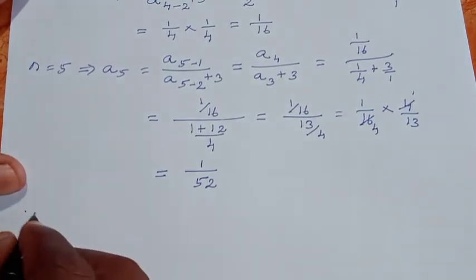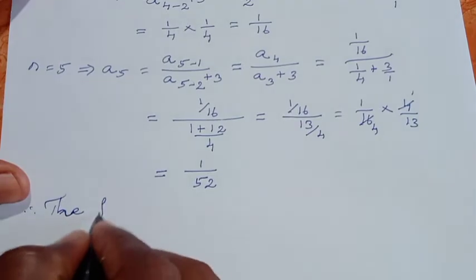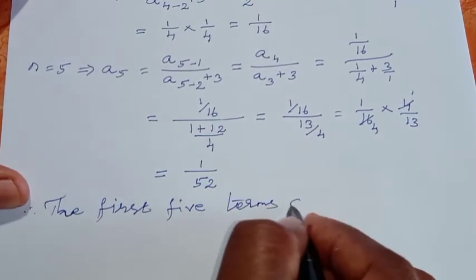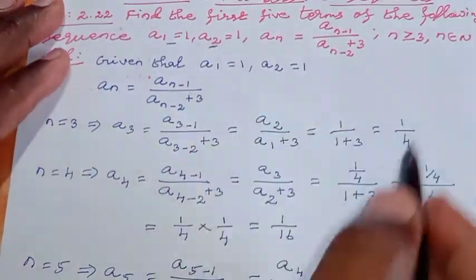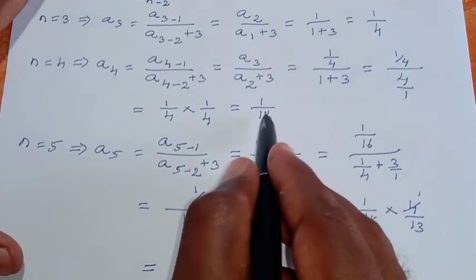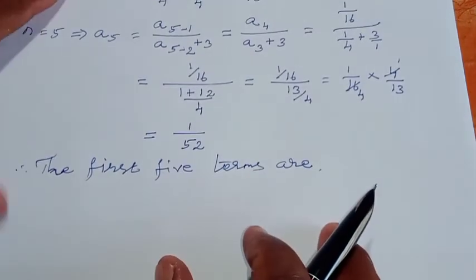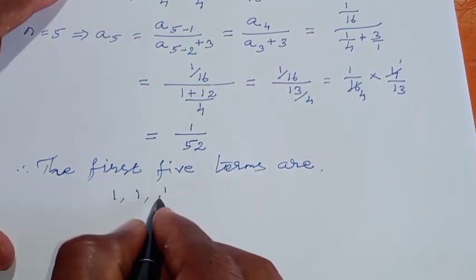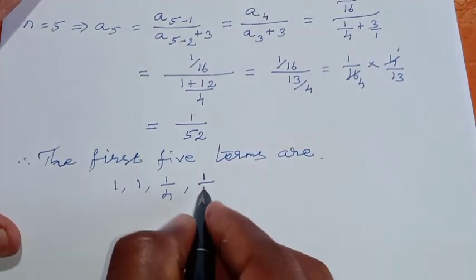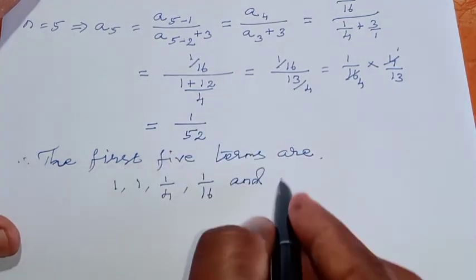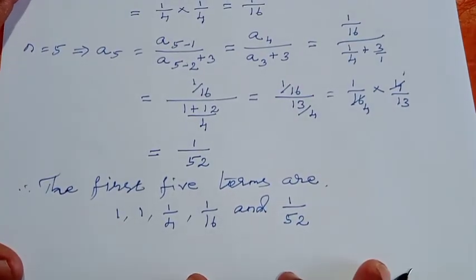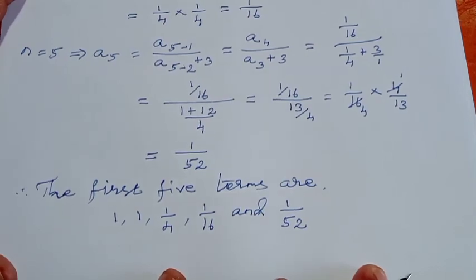Therefore, we have found the first 5 terms. The first 5 terms are: 1, 1, 1/4, 1/16, and 1/52. So we have found the first 5 terms of the given sequence. That's all, this is over. Thank you.